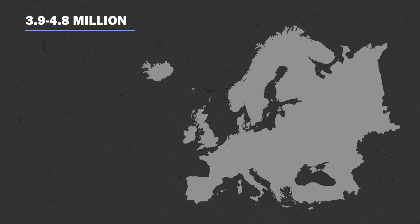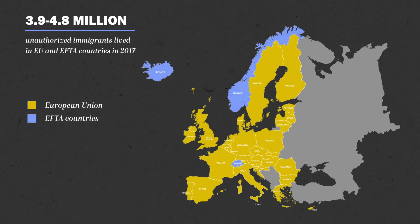This is why we at the Pew Research Center applied our more than 15 years of expertise in measuring the number of unauthorized immigrants in the United States to the populations in Europe. Based on different methods used, we estimate that at least 3.9 million, and at most 4.8 million unauthorized immigrants lived in European Union and European Free Trade Association countries in 2017.